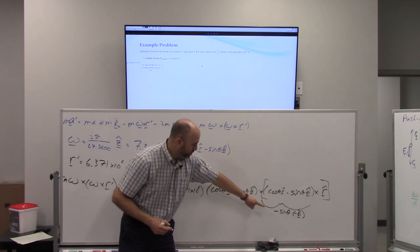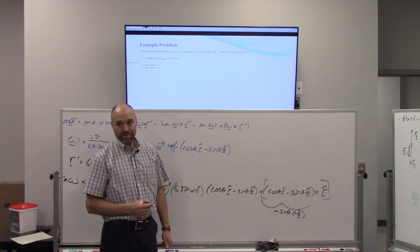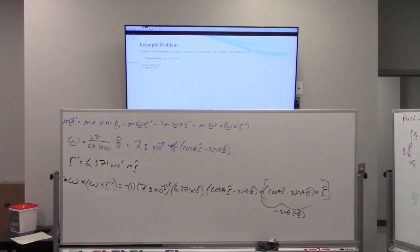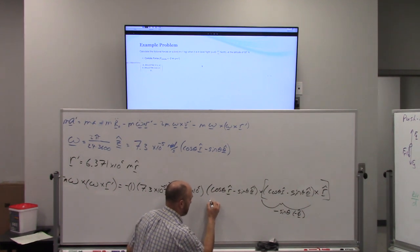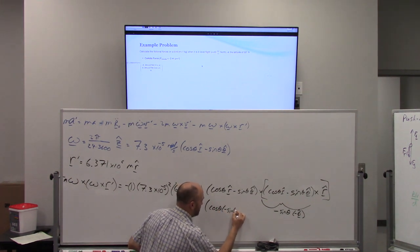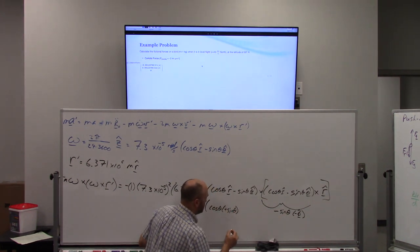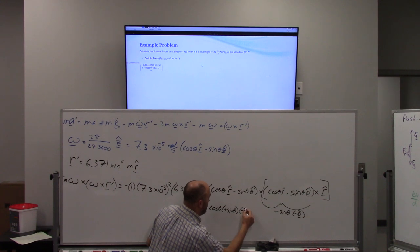And now we got to cross this with that. What's R cross phi? Theta. I'll write that one more time. R cross phi is negative theta. So we're going to have cos theta times negative sine theta times, actually negative negative becomes positive.